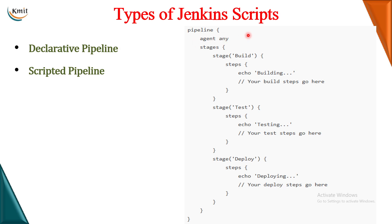Agent any means the script can be run on any machine - it could be a master or it could be any of the slaves. The next one you have is stages. Stage is nothing but the projects that you want to create in your Jenkins. One stage will be for automatic building, one stage will be for automatic testing, one stage will be for automatic deployment. Inside this stage you write something called as steps, which is nothing but the output that you want to display after this stage is successful.